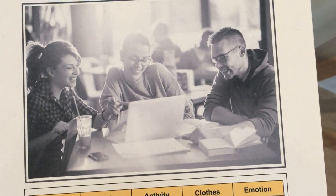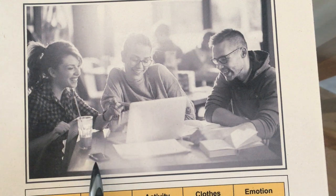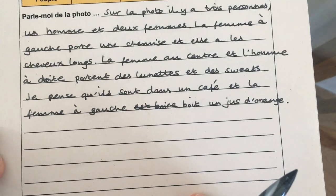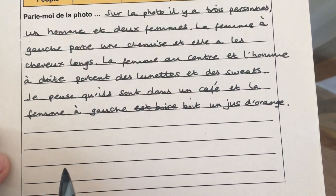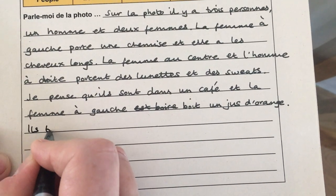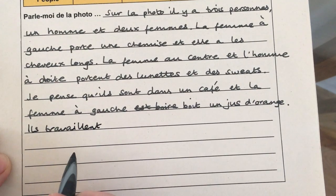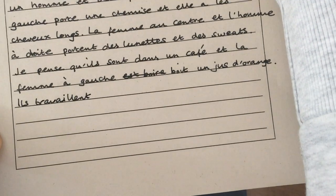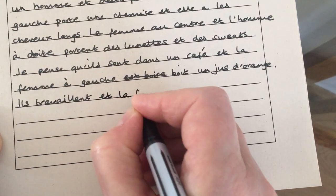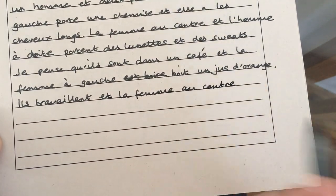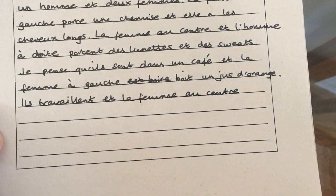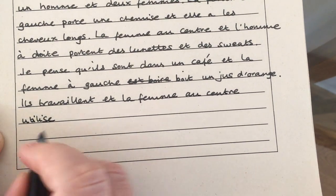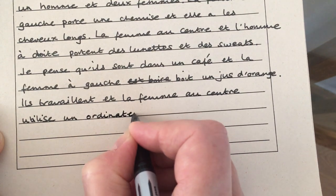Which means I'm now going to move on to the activity. What are they doing? Well, they've got out a laptop, we've got some books, we've got a phone here. So what I'm going to assume is that they are working. I'm going to use the French verb 'travailler', remembering that there is one present tense in French: 'Ils travaillent' — they are working. It's the woman in the centre who looks like she's working on the laptop, so I'm going to add that detail. 'La femme au centre utilise un ordinateur portable' — the woman in the centre is using the laptop.